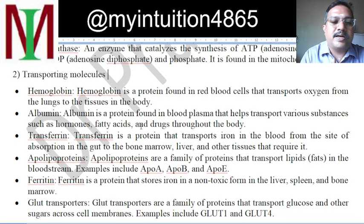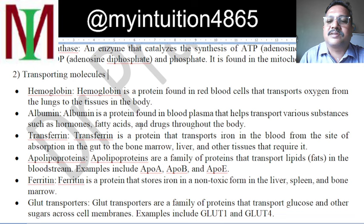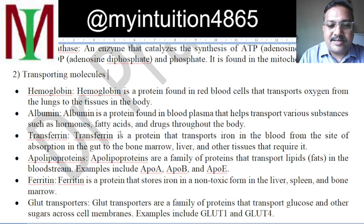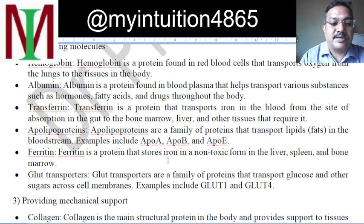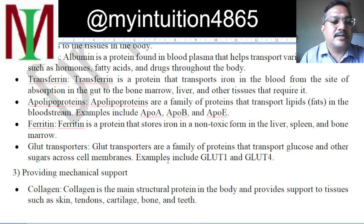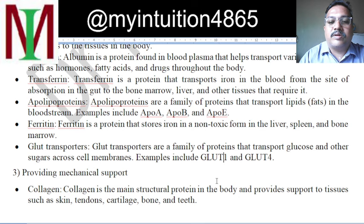Apolipoproteins are a family of proteins that transport lipids — fat — in the bloodstream. Examples include ApoA, ApoB and ApoE. Ferritin is a protein that stores iron in a non-toxic form in the liver, spleen and bone marrow. GLUT transporters are a family of proteins that transport glucose and other sugars across cell membranes. Examples include GLUT1 and GLUT4.